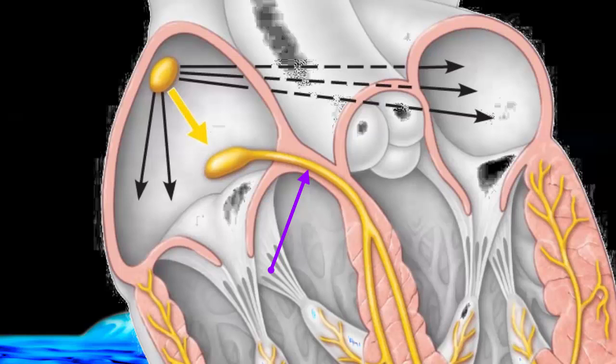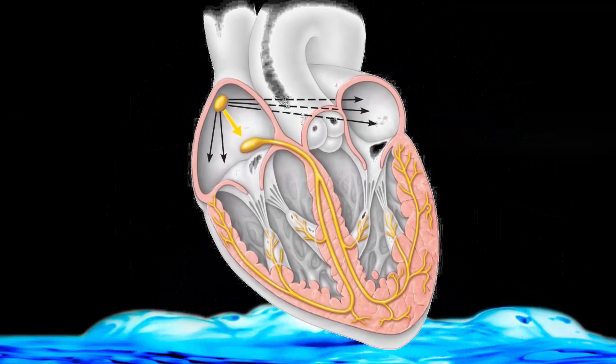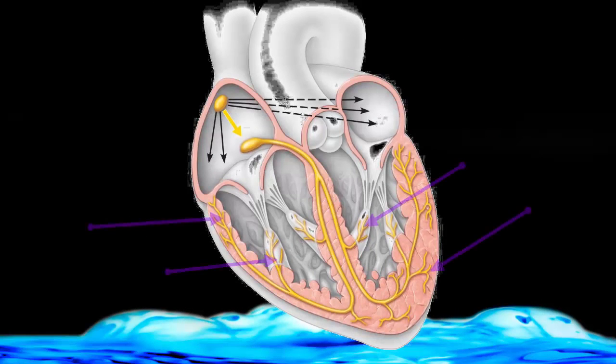The bundle then branches into what we call the bundle branches. The bundle branches travel down to the apex of the heart, giving off smaller branches called the subendocardial conducting network, or Purkinje fibers. It's these fibers that are in contact with the cardiac myocytes.